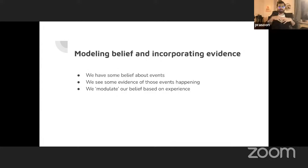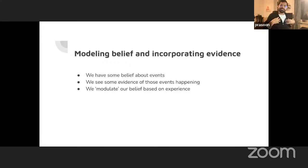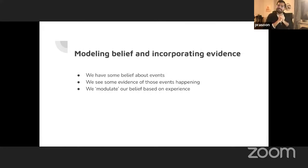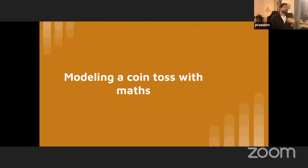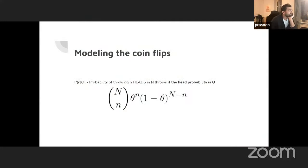Essentially: we start with some belief about coin tosses — most likely 50% — and our probability falls off from there. That's our experience. Then we do the coin flips, get the data (say four out of five heads, 80%), and modulate that probability with our experience. So we'd say: probability of heads is probably not 80% but probably higher than 50%.